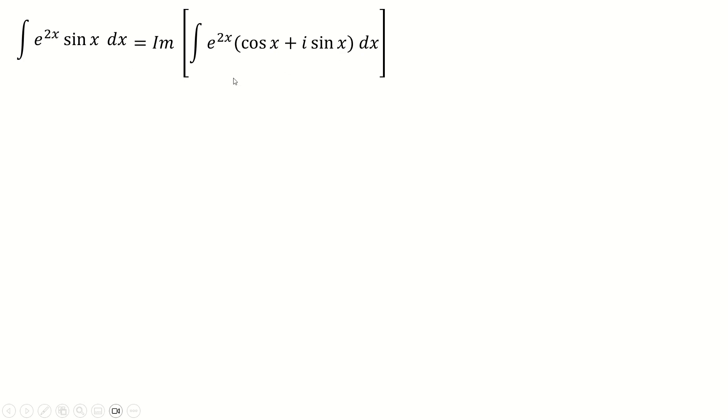So cool. Now, why on earth would I do that? Well, cos x plus i sine x is just e to the ix based on Euler's bad boy equation. So that's all good to go.